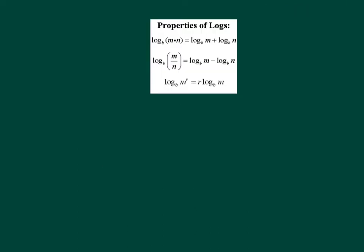Time to get to the nitty gritty — here are your log properties. There are only three of them. One we already used: the power rule — when you take the log, the exponent comes down in front. The other two: when you're multiplying, you can split with addition, and every term gets a log. When you're dividing, you can split with subtraction, and every term gets a log.